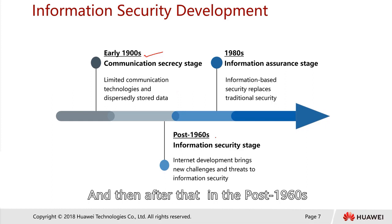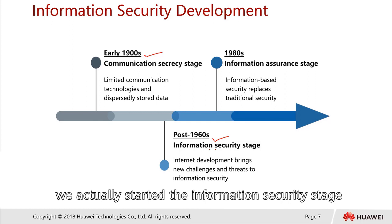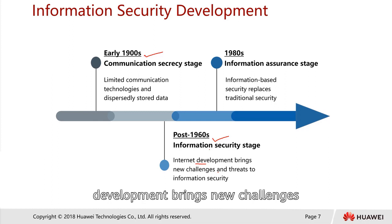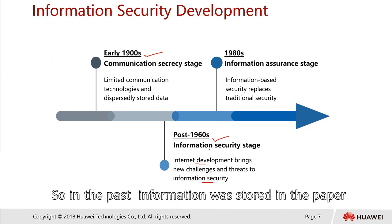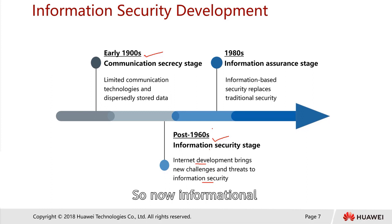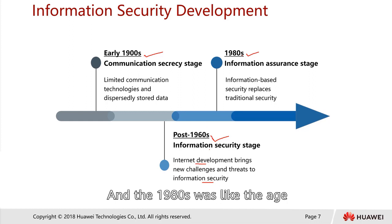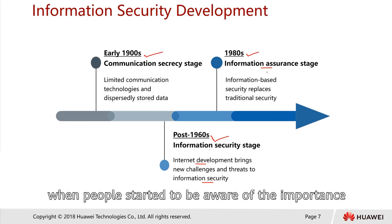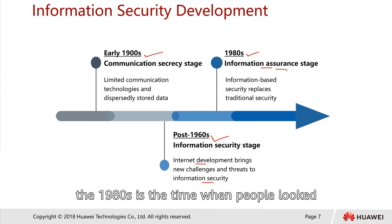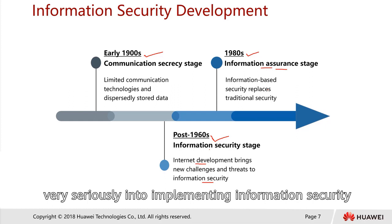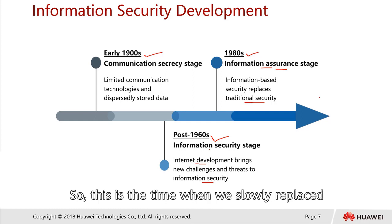After that, in the post-sixties, we actually started the information security stage. This is the time when internet development brought new challenges and threats to information security. In the past, information was stored as hard copy on paper; now information gradually became stored in digital form. In the eighties, people started to become aware of the importance of digital information and began seriously implementing information security, slowly replacing traditional security.